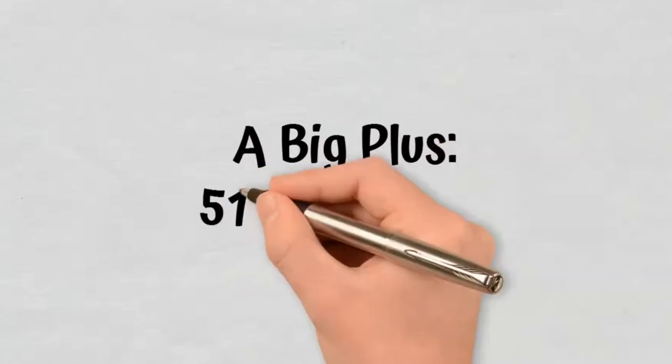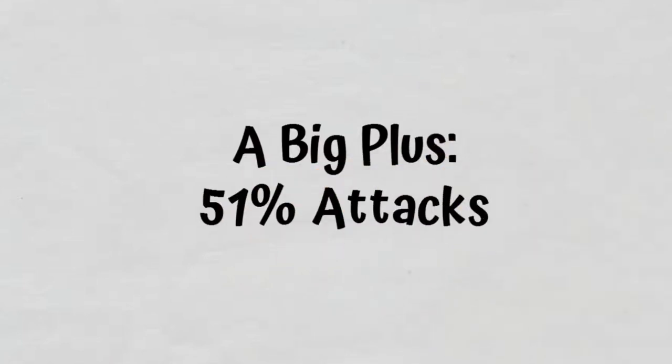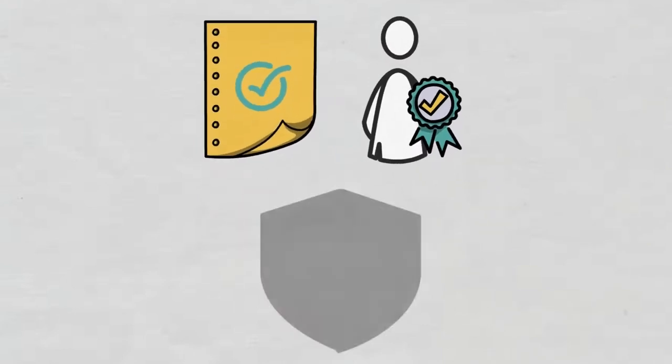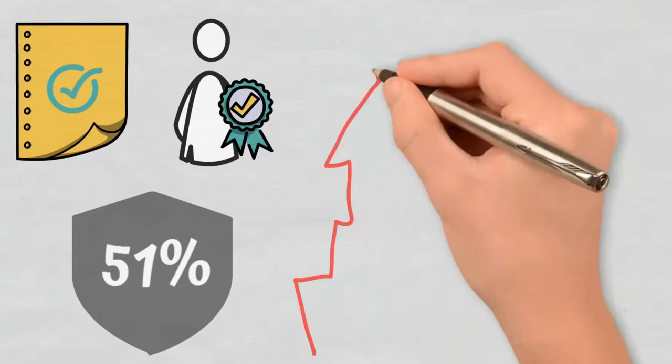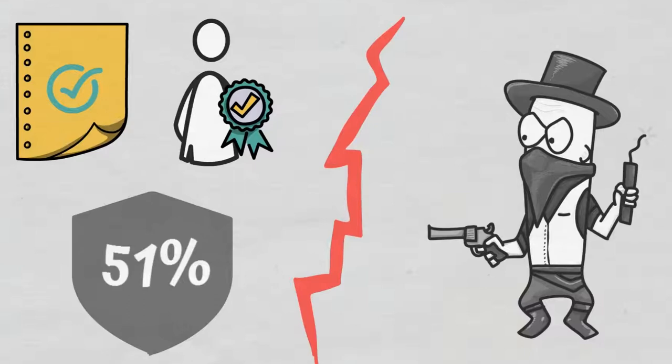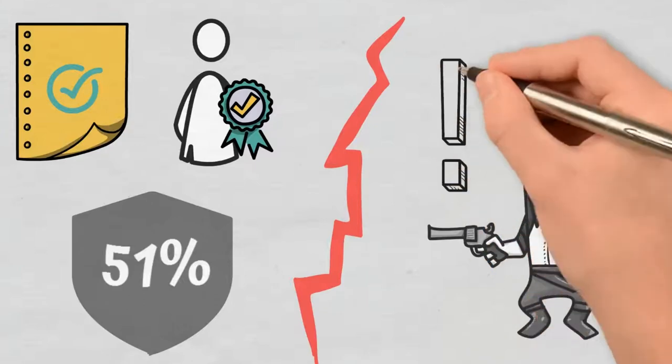A big plus! 51% attacks. Both Proof of Work and Proof of Stake were created to prevent 51% attacks, so that no bad actor would have the chance of gaining majority control over mining power. Such attacks are rare, but they did happen.